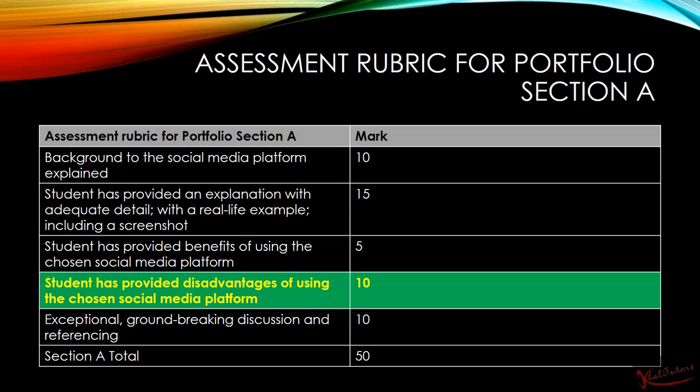The mark is 10, which is sort of confusing for me. Why would they give you 10 for writing the disadvantages and give you 5 for writing the advantages? Perhaps because the advantages are obvious — I don't know. But yeah, that's what they decided to do.